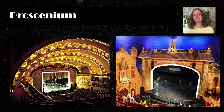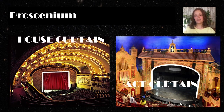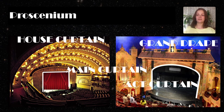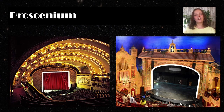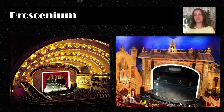The proscenium arc is typically located in front of the stage curtain, which is also known as the house curtain, act curtain, grand drape, main curtain, proscenium curtain, or simply drape. This is the curtain that separates the audience from the stage. It usually opens to display the stage at the start of a performance and closes at intermission and after the performance.